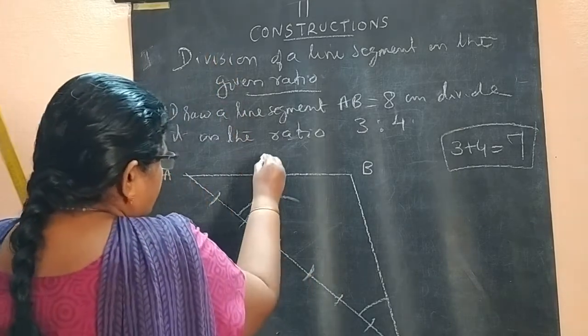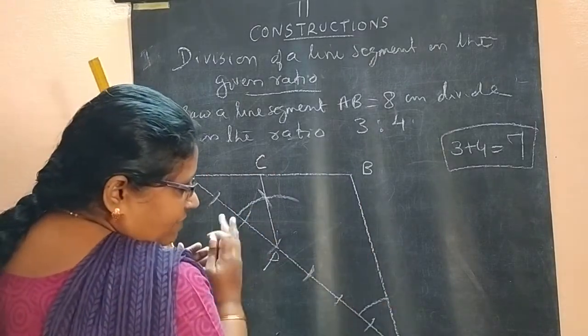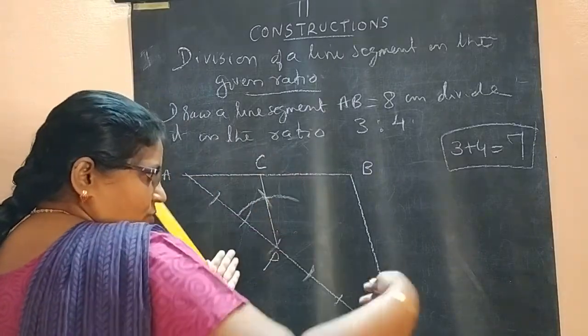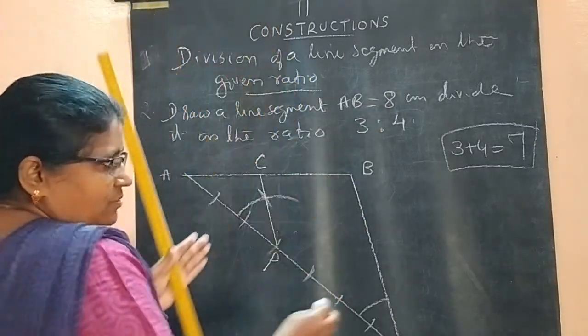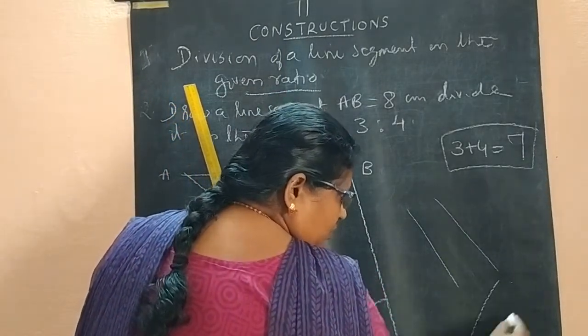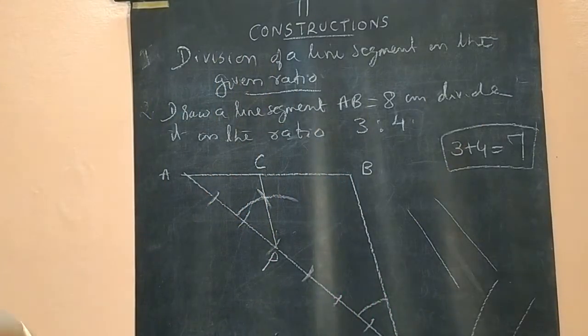It is intersecting here. See, these two are parallel. By seeing only, we will come to know whether they are parallel. Parallel means like this or like this. If it is like this, next one like. If it is this direction, next one this direction. That is called parallel.